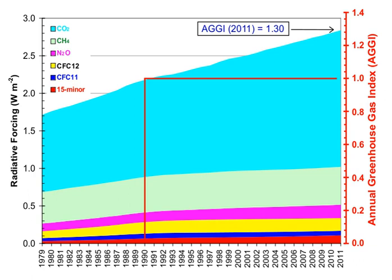A 2011 IPCC report included a literature review of numerous energy sources' total life cycle CO2 emissions. Below are the CO2 emission values that fell at the 50th percentile of all studies.